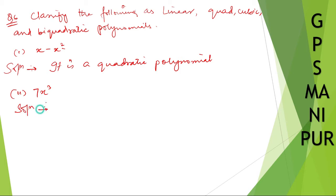Room number 2: 7x cube. Solution - here the power is 3, so it is cubic. It is a cubic polynomial.